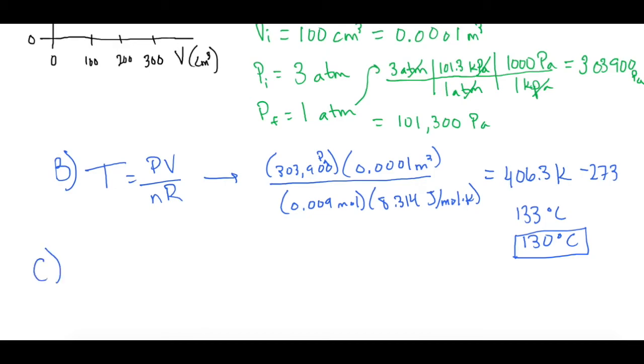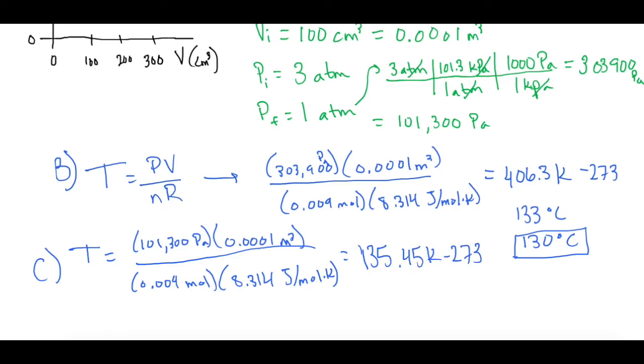Part C, we're going to do the exact same thing, except that now we're plugging in the final values. So the final pressure is 101,300 pascals. The volume doesn't change, so 0.0001 meters cubed. Divide all this by 0.009 moles times the constant 8.314 joules per mole K. This will give us 135.45 kelvin minus 273, and that gives us a final temperature of negative 137.55 degrees Celsius, or negative 140.